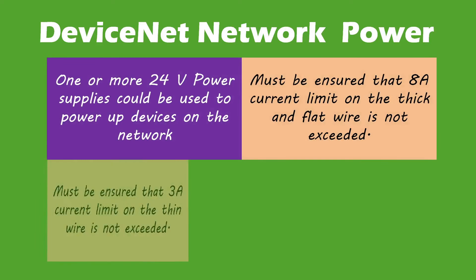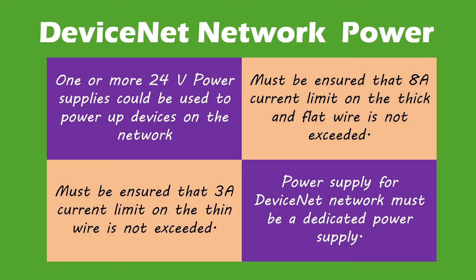One or more 24V power supplies can be used to power devices on a DeviceNet network. While powering up the network, it must be ensured that the 8 ampere current limit on thick or flat wire and the 3 ampere limit on thin wire is not exceeded. The power supplies used must not be used for any other purpose — they should be dedicated to the DeviceNet network only.